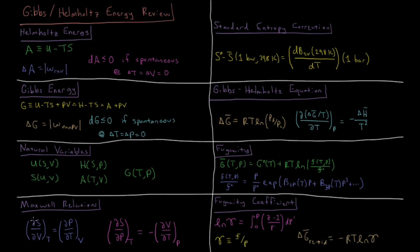From the Helmholtz energy we get relations like (∂S/∂V) at constant T equals (∂P/∂T) at constant V. This gives us the volume dependence of entropy as a function of the temperature dependence of pressure — expressing something that is hard to calculate in terms of something that we do know.